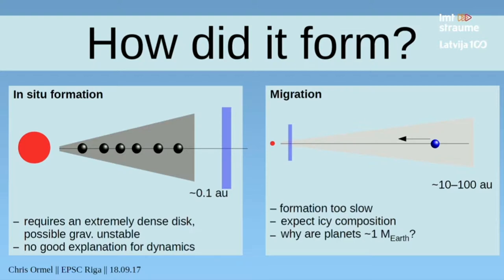There are two scenarios in the literature. The first one is the in-situ formation scenario, and the other one is the migration scenario. But we argue that both scenarios don't work very well for TRAPPIST-1.